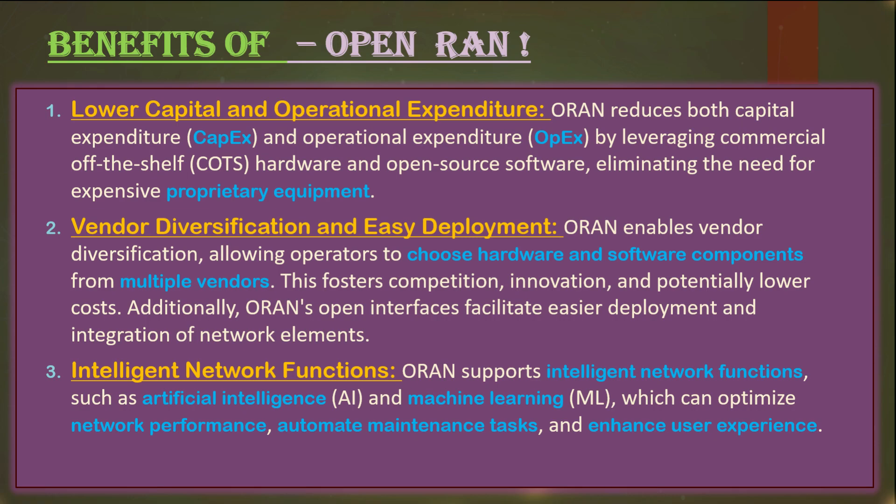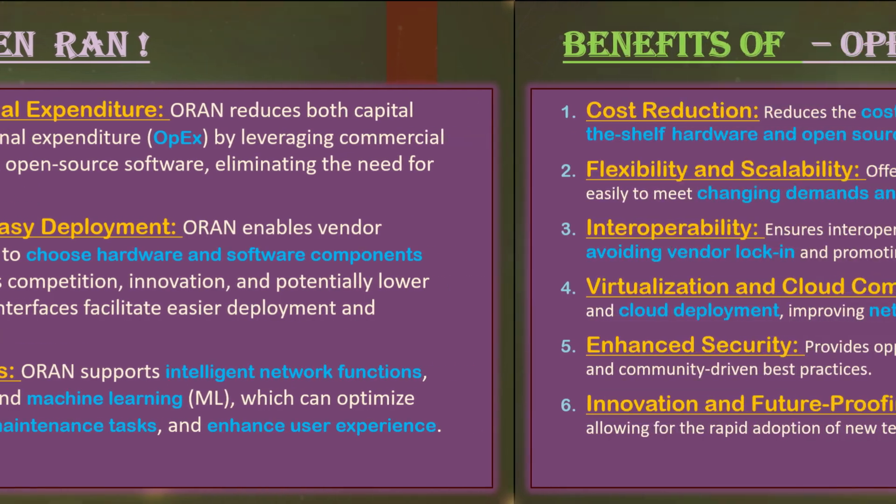Another important goal and expectation from the Open RAN ecosystem is to add more intelligence into the network by deploying AI — artificial intelligence — and machine learning for better and on-time decisions. This will allow the network to self-optimize for the future based on historical data and predictions, making handling and operations much smarter.